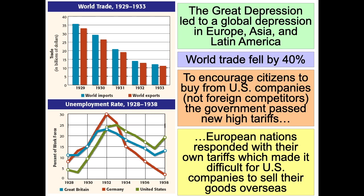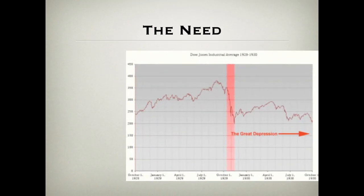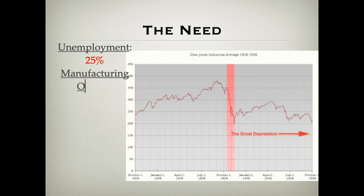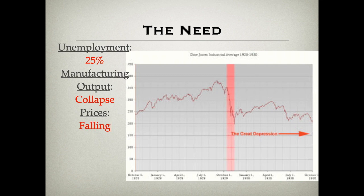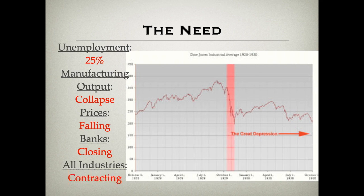The President of the United States, Herbert Hoover, a laissez-faire Republican, his response was: the economy will fix itself. But the American people were in crisis — there was a huge need. Look at this chart showing the Dow Jones stock market; you can see how it collapsed at the end of 1929. Because of that, 25% of the American population was out of work. There was no manufacturing, companies were closing all across the country. Prices were falling and collapsing, banks were closing, and every industry in the American system began to contract. The capitalist system completely fell apart.